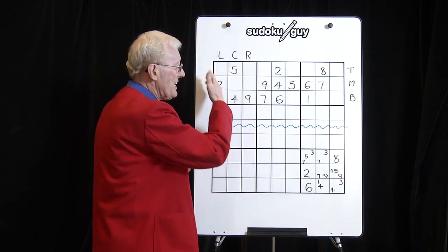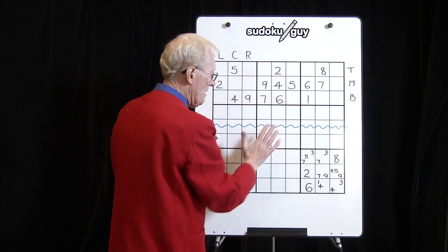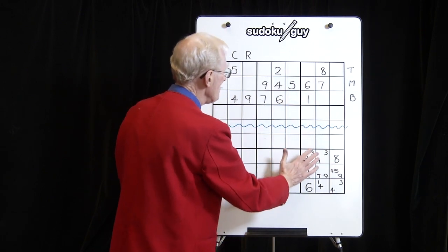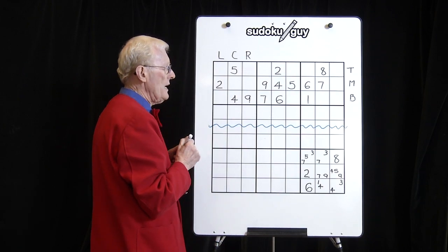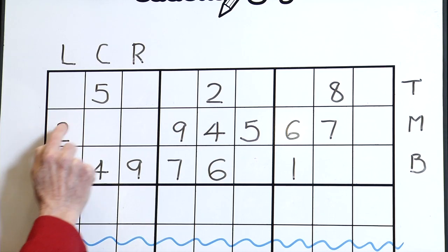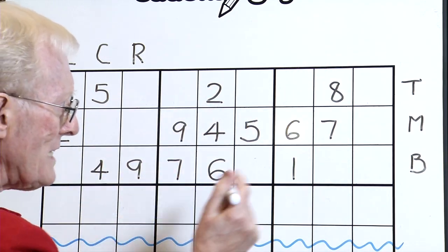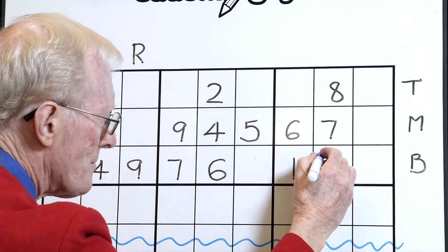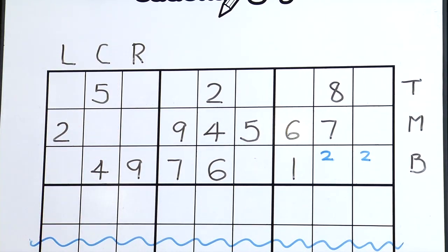On this particular section, all we're looking at is these three blocks — forget below for the time being. When I look at the ones, well there's only one one. Let's go to the twos: we have a two in the middle, we have a two on the top, and therefore over in this block the two has to be there or there. There's no three, so let's go to fours — a four could be up in here, there, or there.